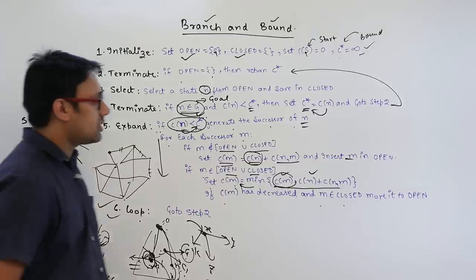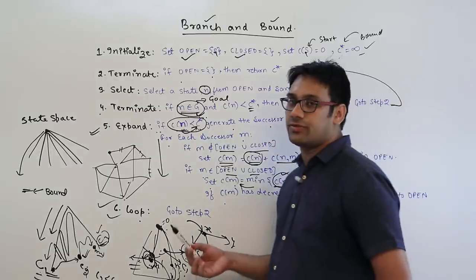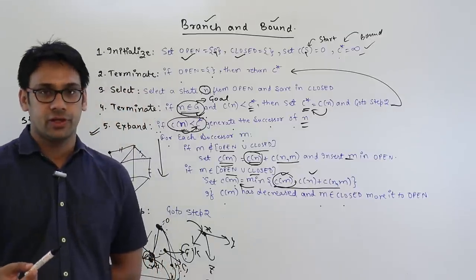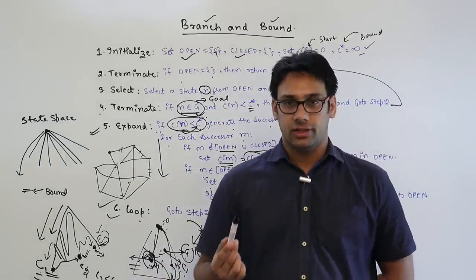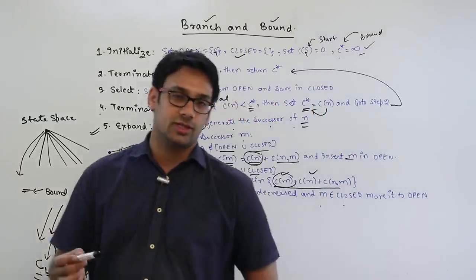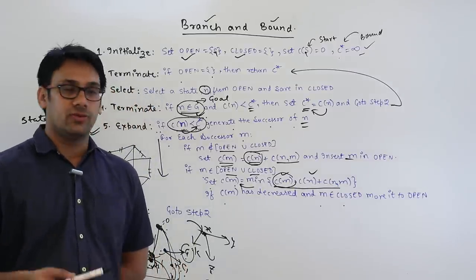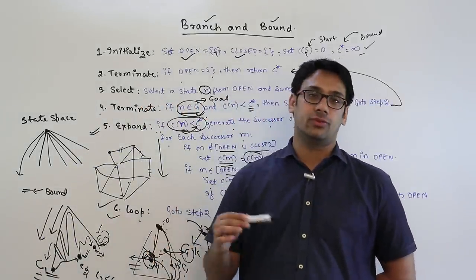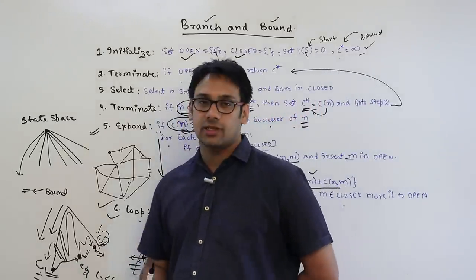That is the branch and bound algorithm. I will now take a few examples — applying the branch and bound algorithm on a specific graph or state space — to give a better explanation. Whenever I say 'graph,' assume I mean 'state space' unless I specify otherwise. Let us explain this algorithm with an example.